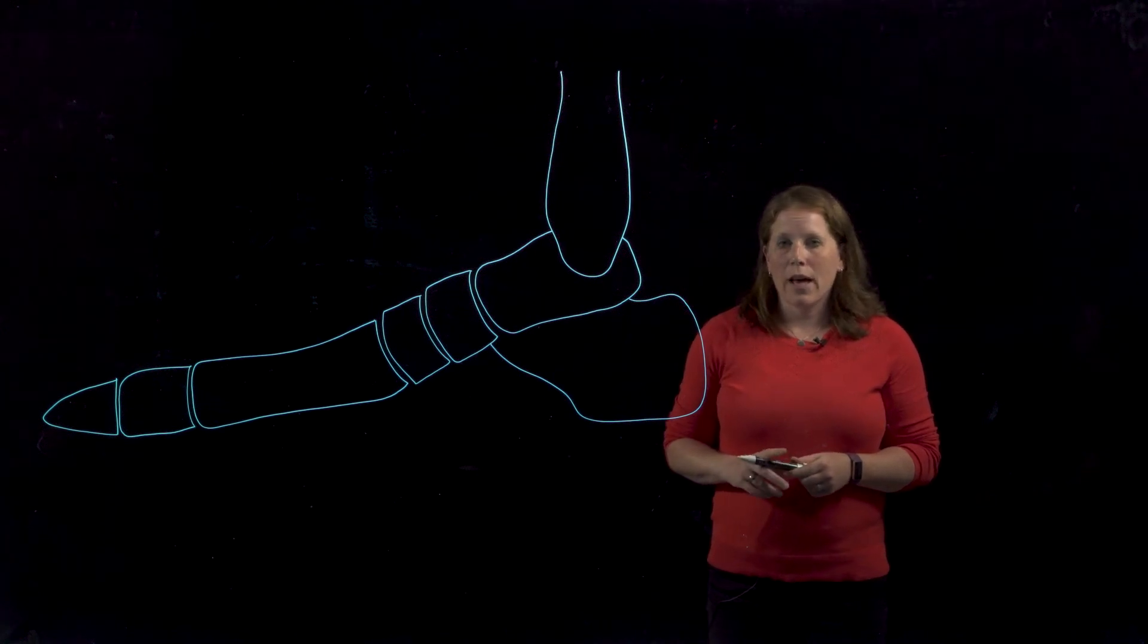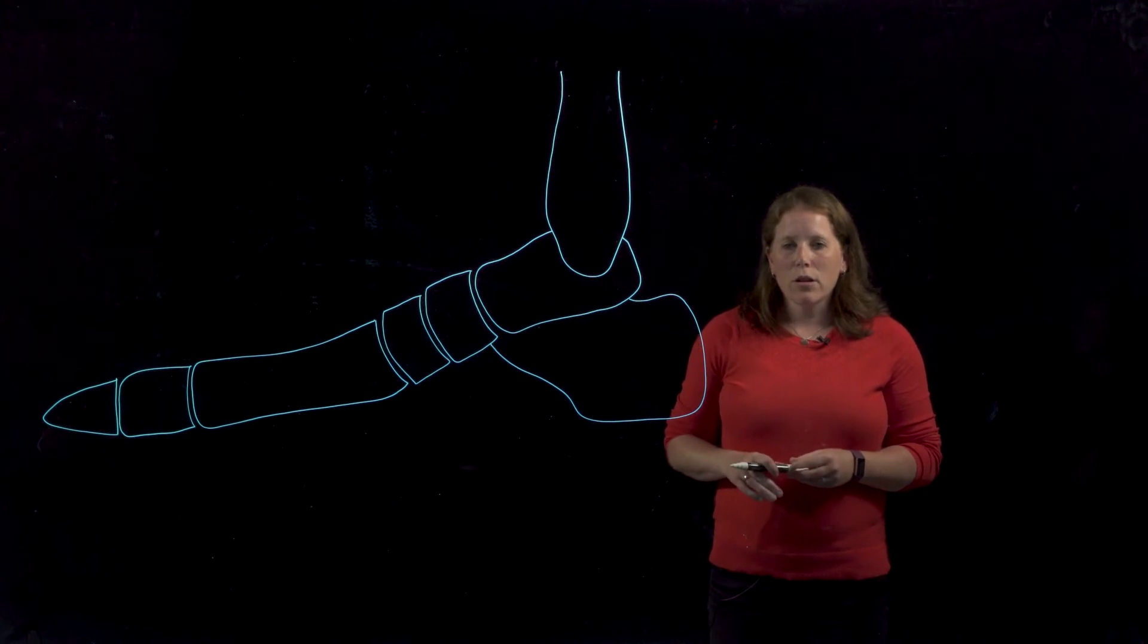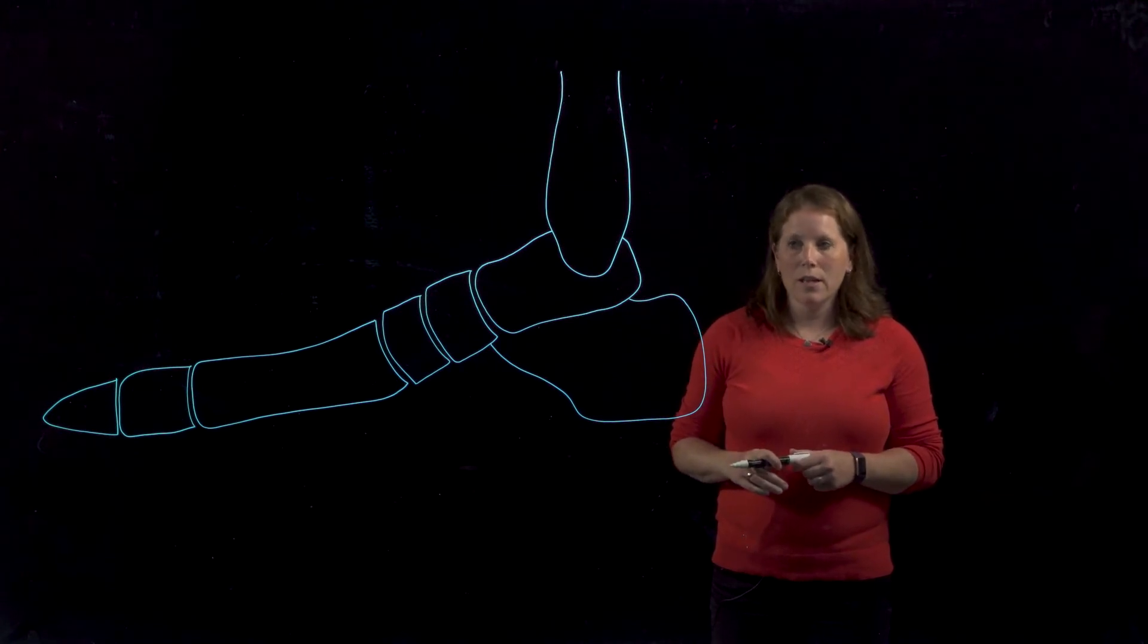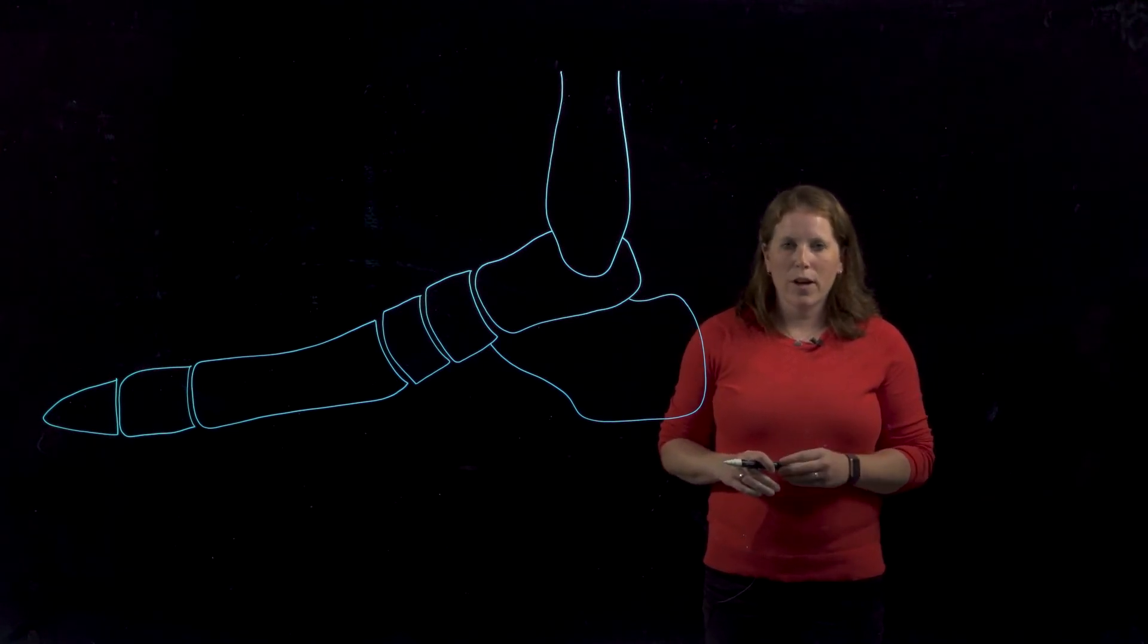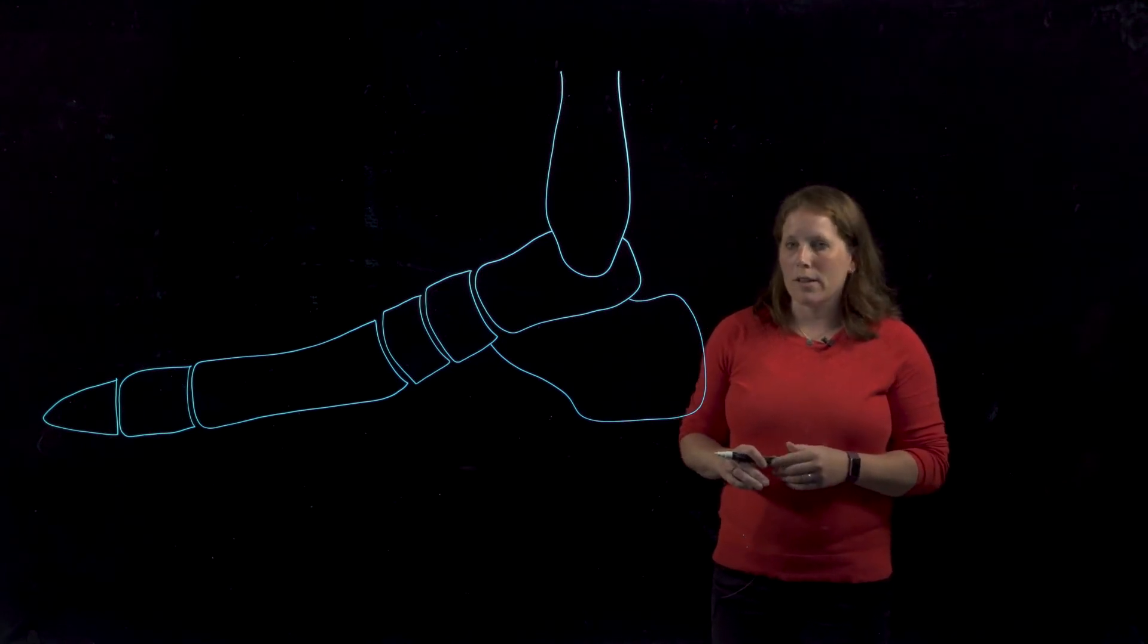In this video we're going to look at the medial aspect of the ankle and foot and we're going to look at structures from the deep posterior leg compartment that pass posterior to the medial malleolus. They do so in a very organized fashion and we need to know the sequence. So we're going to show you that in this diagram.